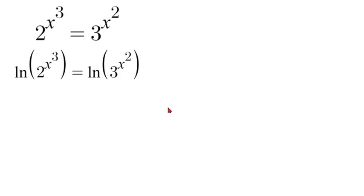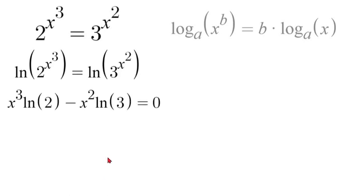Now using log properties we're going to move our exponents to the front. If we have log x to the power of b, that would be equal to b times log x. So we can move that exponent to the front. We'll have x cubed natural log of 2 minus x squared natural log of 3 is equal to 0. We moved the natural log and subtracted it, moving it to the left side.